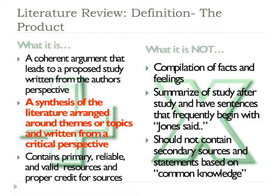This brings us back to our questions from the beginning of the session: what is a literature review and what is its purpose? Let's first consider what a literature review is not. A literature review isn't a compilation of facts and feelings — it's not a library. It's not a summary of studies; you shouldn't have 'he said this, she said this.' You may start out constructing your literature review by providing summaries of different research studies, but it shouldn't stay there. Also, a literature review does not contain secondary sources — you use primary sources. You shouldn't say 'Joan said Anderson said this.'